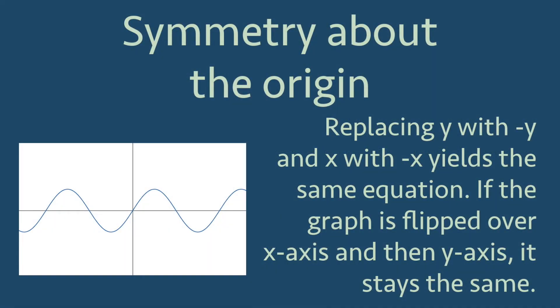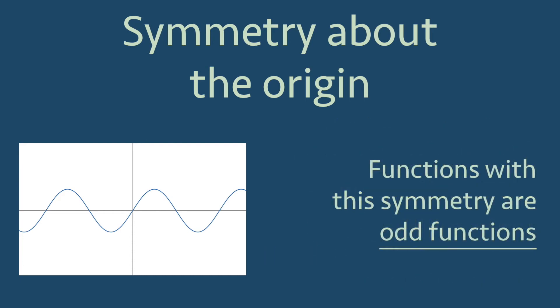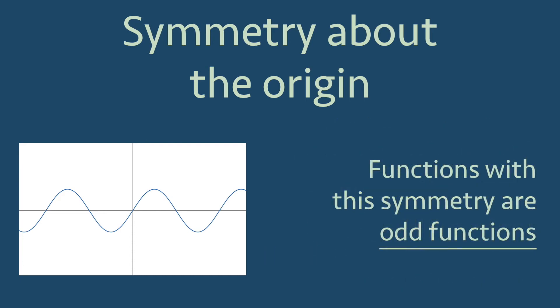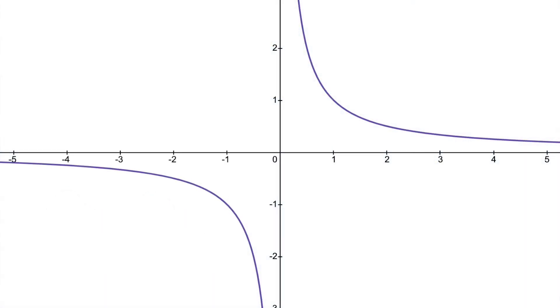There is, however, a different symmetry for the sine wave. It is symmetric about the origin. What this means is if we flip the graph over the x-axis and then flip it again over the y-axis, then we get the same graph. When it comes to the equations, this means if we replace y with negative y and also replace x with negative x, then we get the same equation. This also means that the function is an odd function. Another odd function is y equal 1 over x, which has the following graph and is also symmetric about the origin.